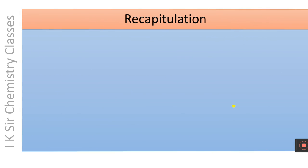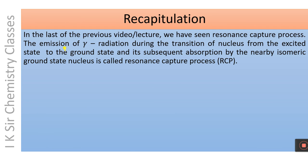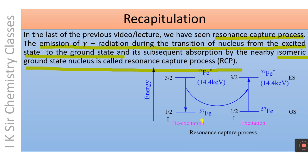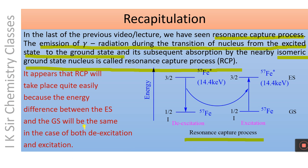First, let us recapitulate the resonance capture process from the previous video. The emission of gamma radiation during the transition of a nucleus from the excited state to the ground state, and its subsequent absorption by a nearby isomeric nucleus, is called the resonance capture process. It has been illustrated in the following figure.